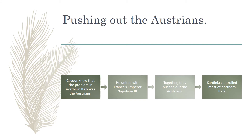Pushing out the Austrians: Cavour knew that the problem in northern Italy was the Austrians. Italy had been under control of many different foreign powers, one of them being the Austrians. He united with France's Emperor Napoleon III, and together they pushed the Austrians out of Italy. After that, Sardinia controlled most of northern Italy.